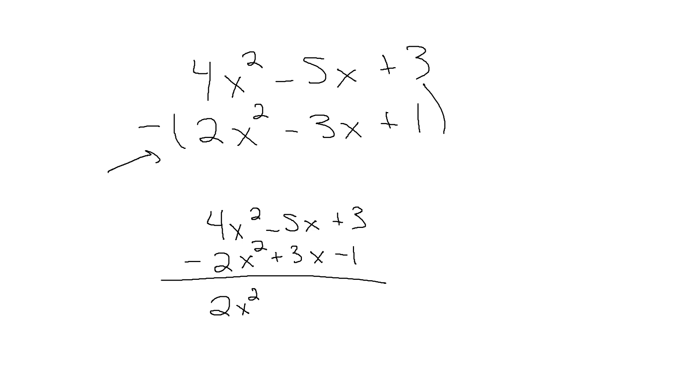Minus 5x or negative 5x plus 3x. If you have your calculator, you're not confident in it, just type it in. If you don't have your calculator, remember different signs, we subtract. 5 minus 3 is 2. And we keep the sign from the bigger number. 3 minus 1 is 2. And this is going to be my complete answer.